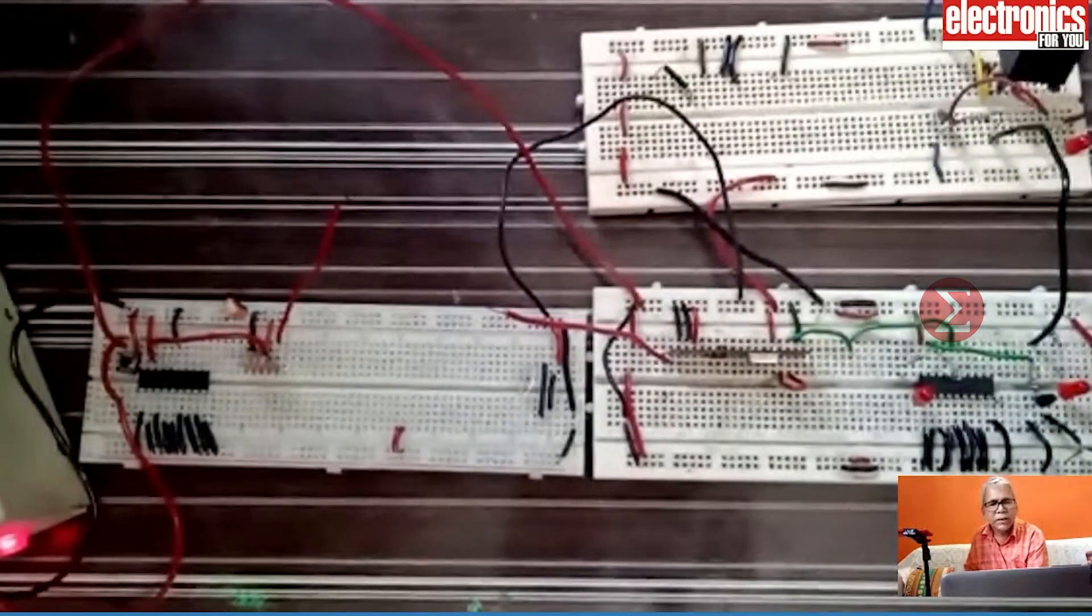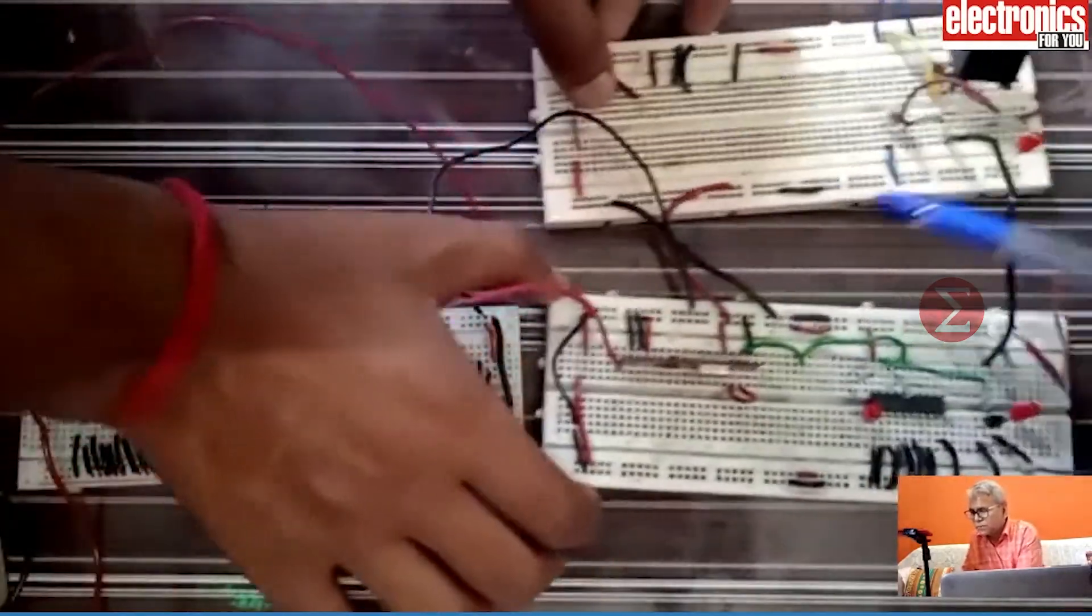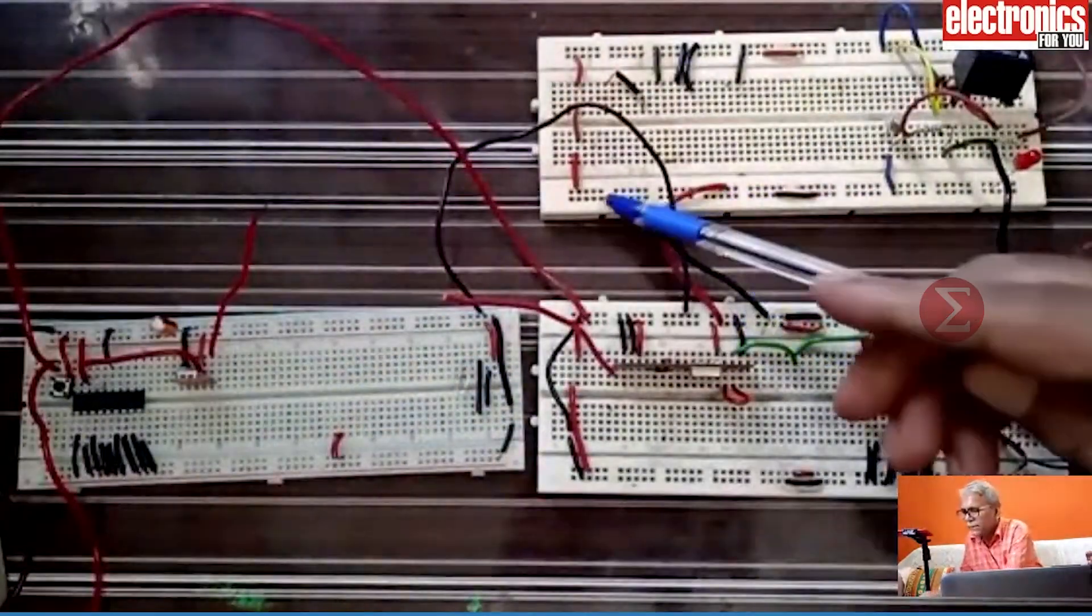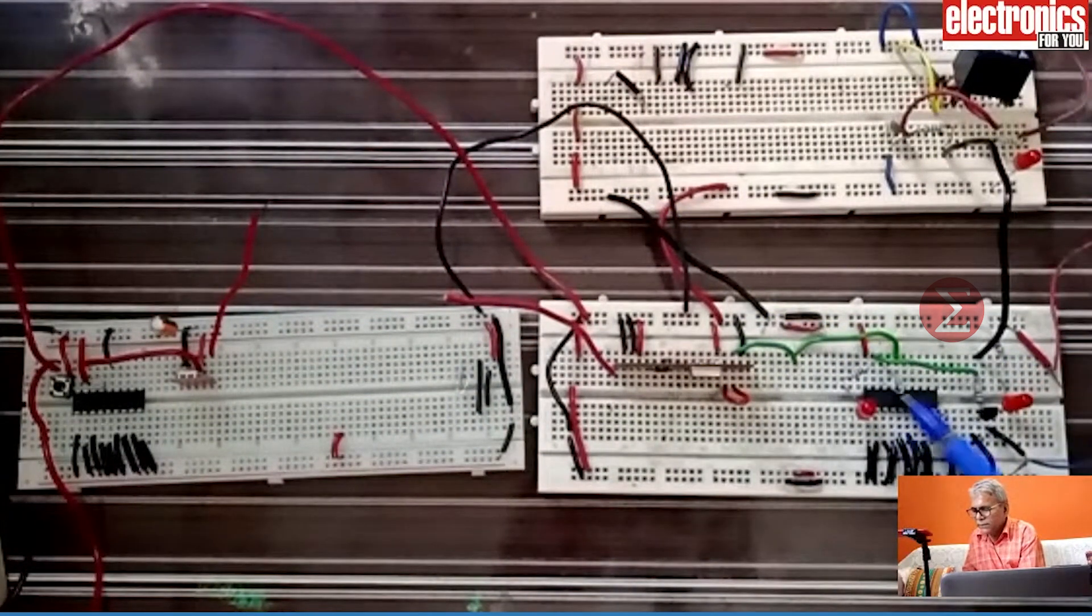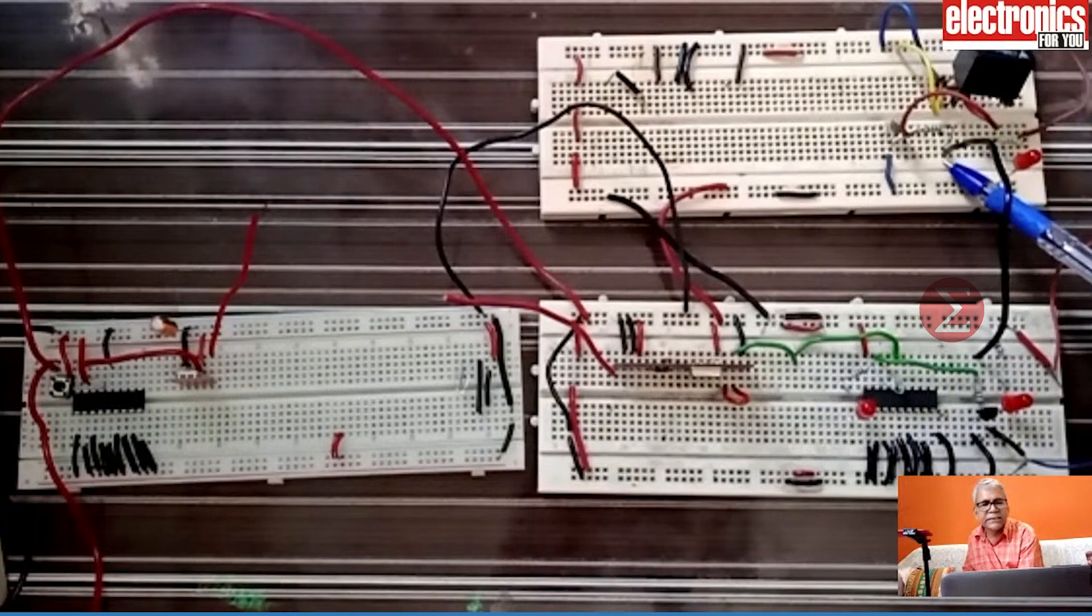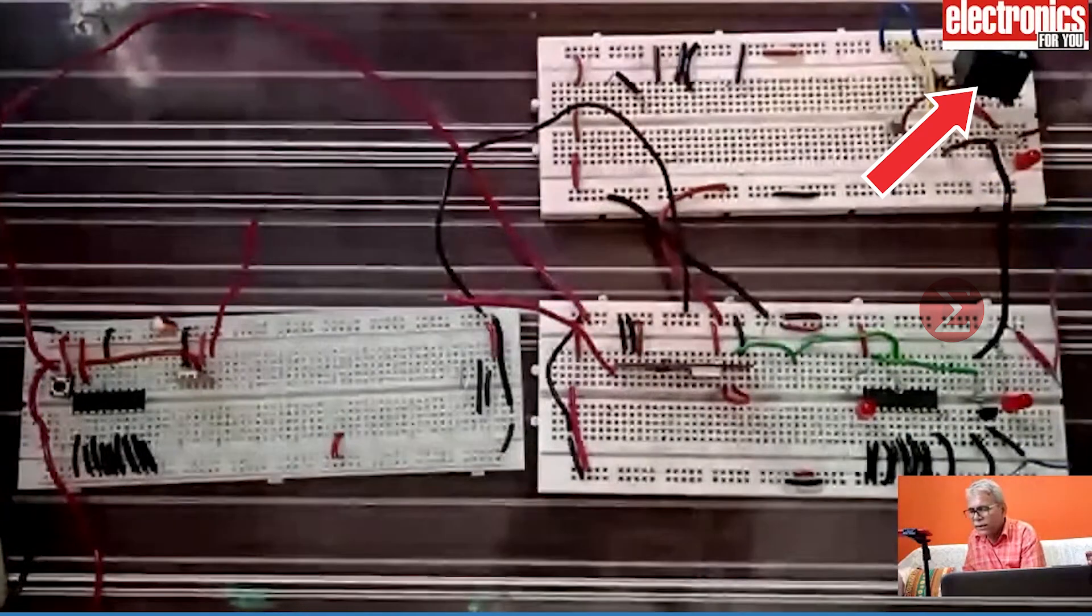You can also create the extension of this project by using 5V relay and a relay driver circuit. If you want to connect an AC ringer call bell, then this circuit at the receiver end will be used. This is a relay driver transistor and a 5V relay.